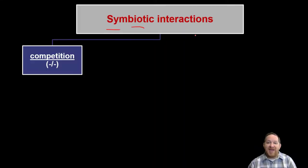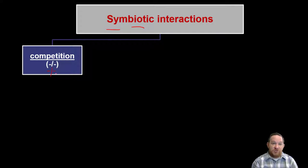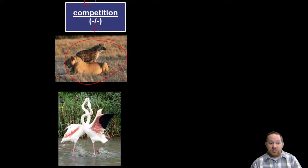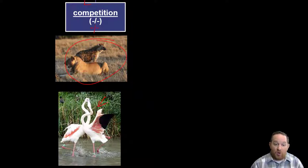What are some other interactions we might see in terms of symbiosis — 'life together'? Some are positive, some are negative. The first is competition, shown with two negatives, meaning both species are negatively impacted. Competition is not good because there are limited resources, so both are hurting. Prime examples: the lion and the spotted hyena competing for the same food, and flamingos competing for food or mates. Competition is when no one benefits.